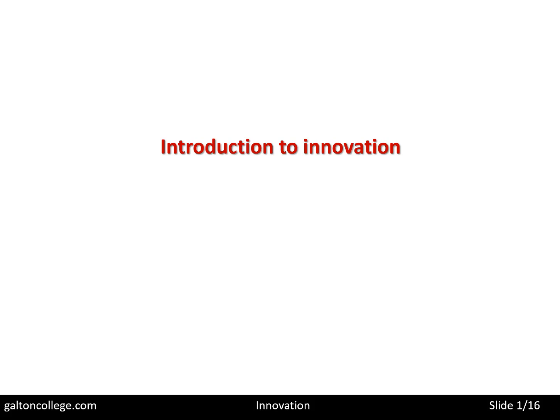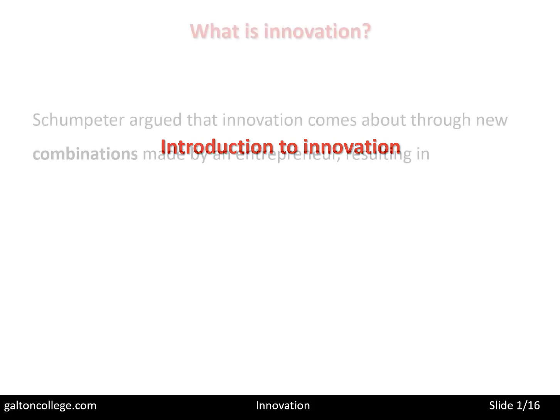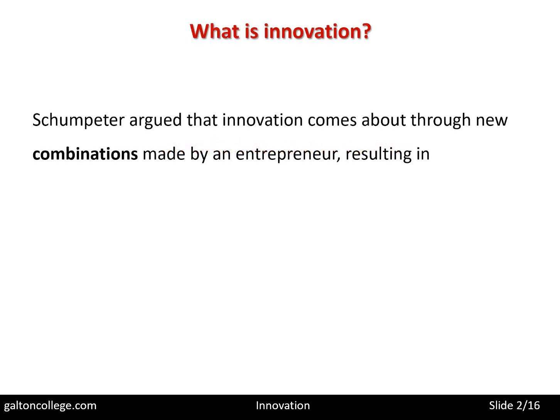So let's start and introduce Schumpeter. Schumpeter is one of the big names when we consider innovation — a great Austrian economist from around the 1930s. His work was seminal; it was the first of its kind.